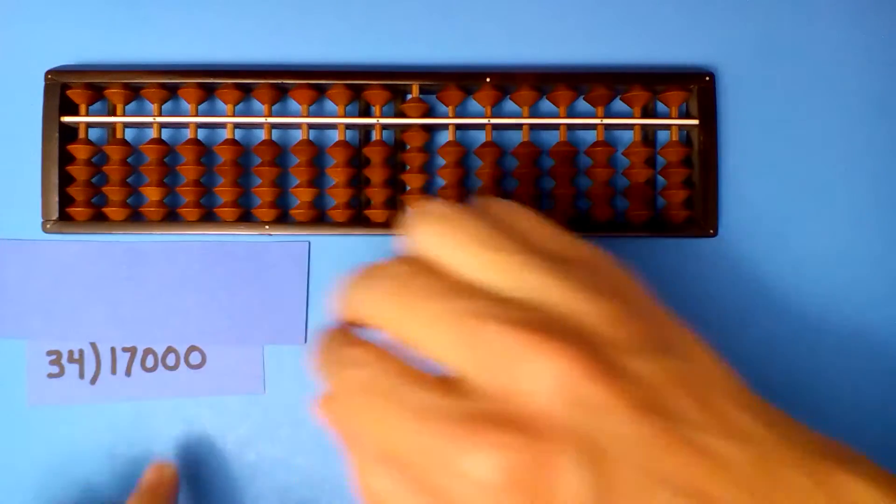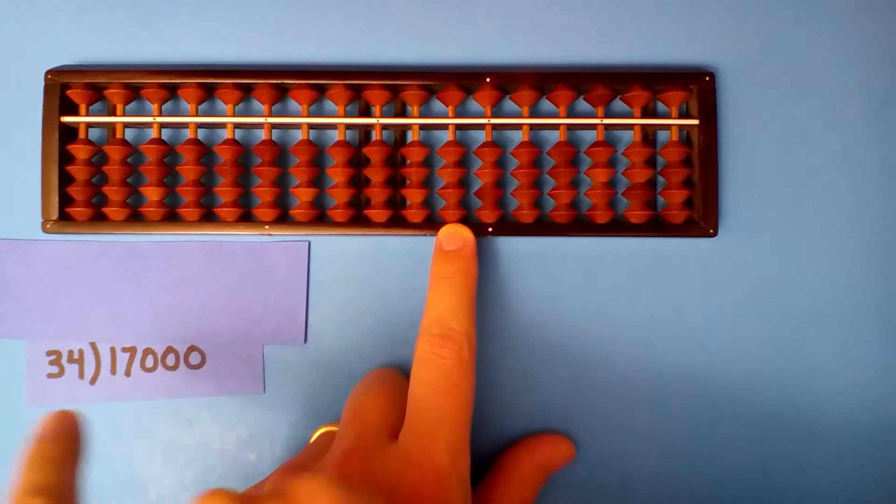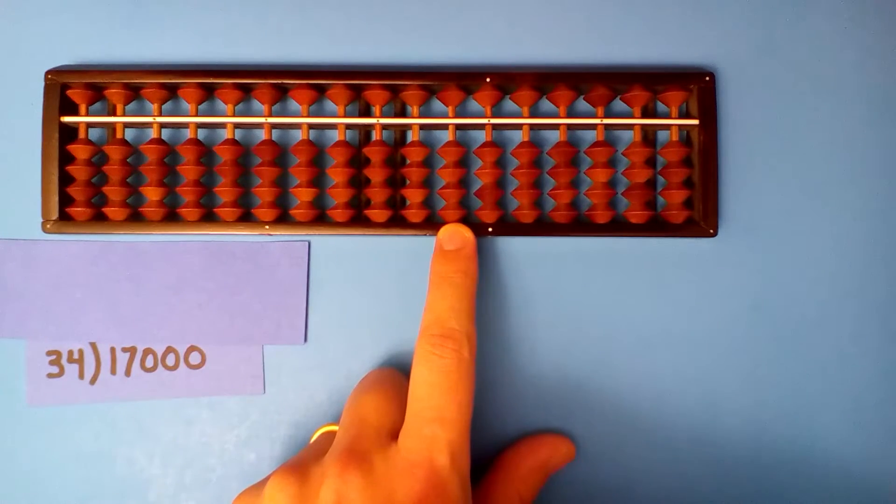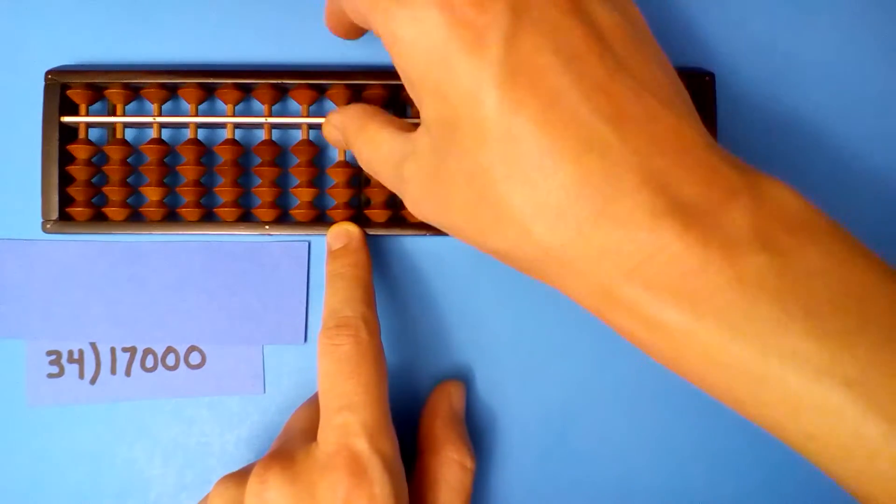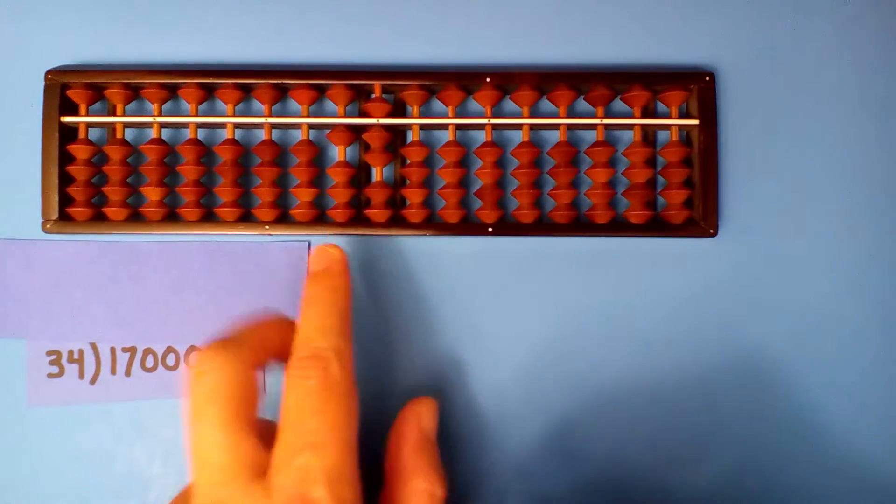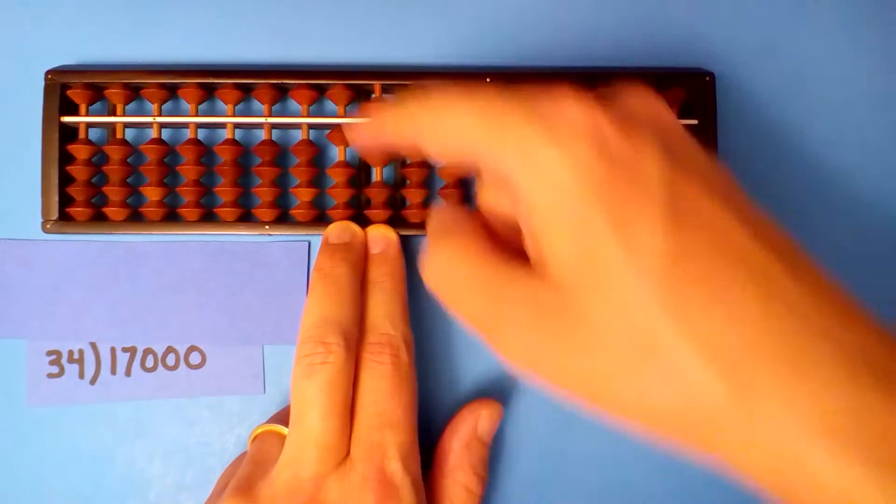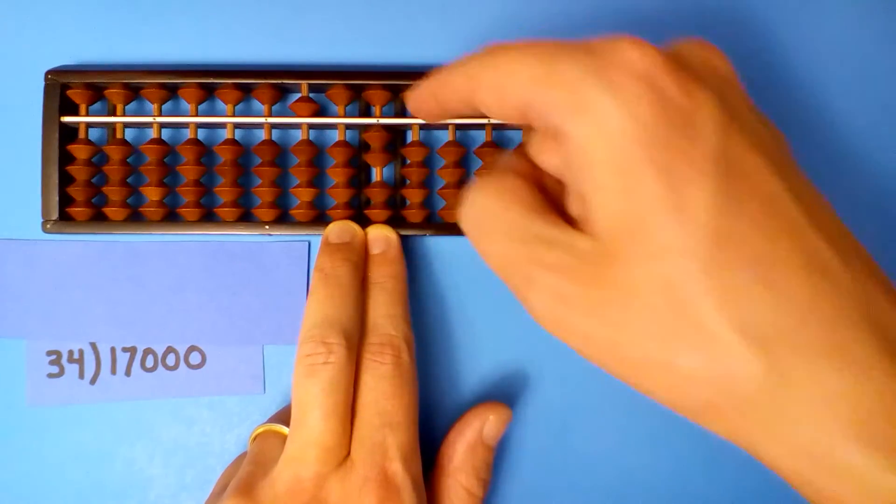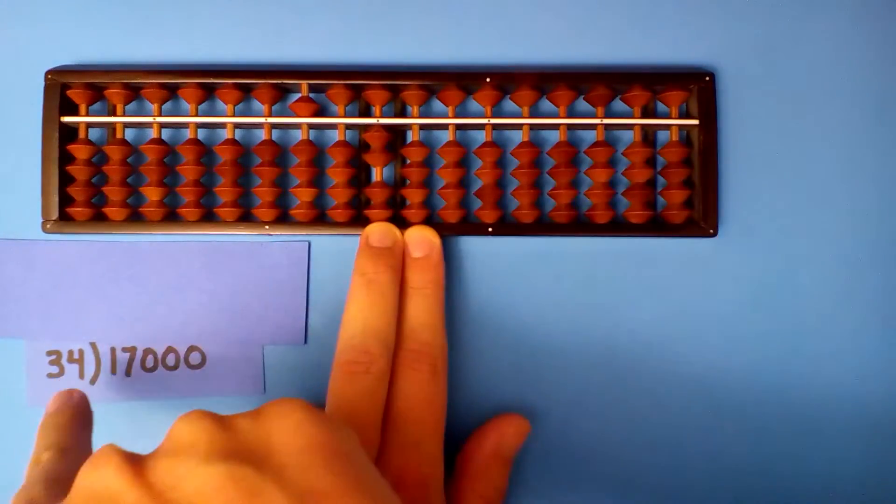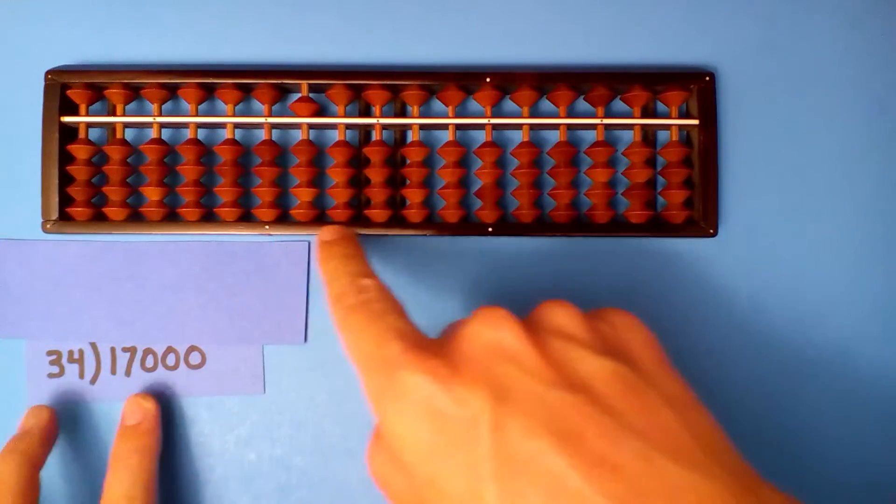17,000 divided by 34. 5 versus 2, 3 more digits: 1, 2, 3. Set up our dividend and divide. 3 goes into 15 five times. 5 times 3 is 15, 5 times 4 is 20. We're done. Our quotient is 500.